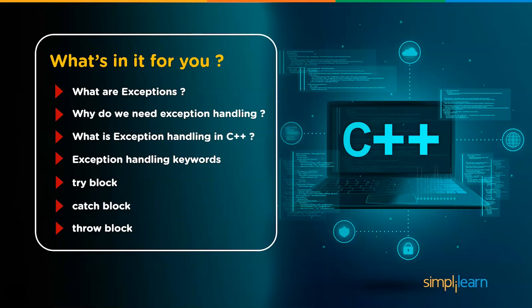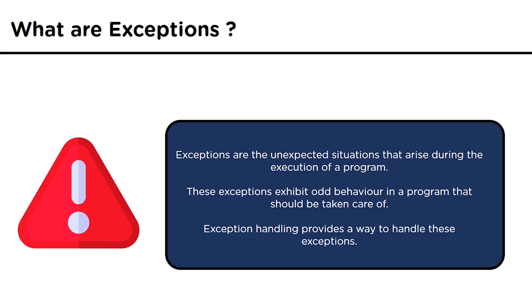Exceptions are unexpected events or situations that arise during the smooth execution of a program. There are times during runtime when some errors or situations arise which create issues in the program — these are called exceptions. For example, if you want to divide seven by zero, it will show an error because dividing by zero is undefined.